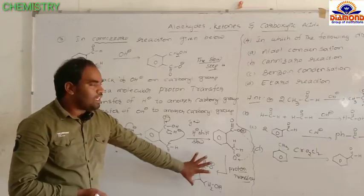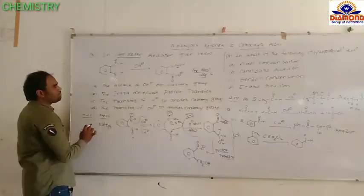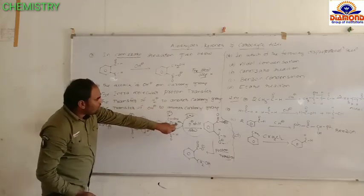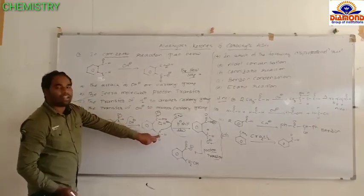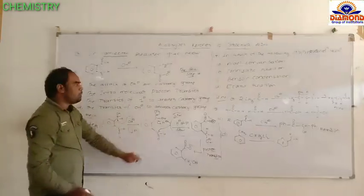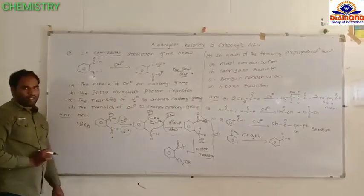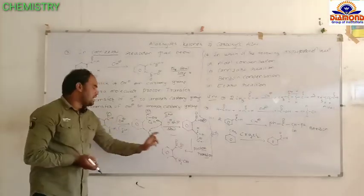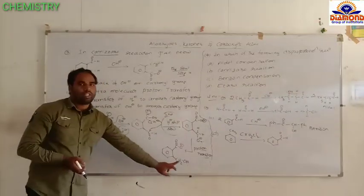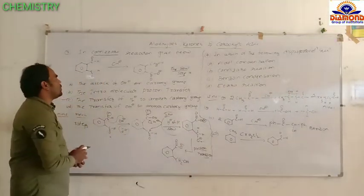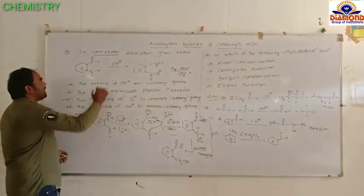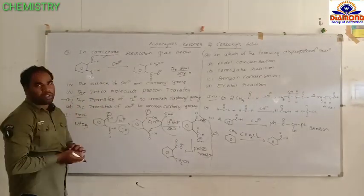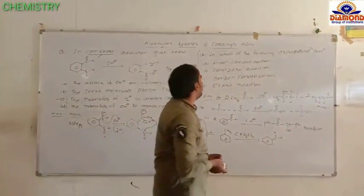So totally, the Cannizzaro reaction has three steps: hydroxide ion attacking the carbonyl carbon; hydride shift to another carbonyl carbon; and proton transfer. The transfer of hydride to another carbonyl group is the slow step. In this reaction, one aldehyde is converted into carboxylic acid and another aldehyde is converted into alcohol. That is the Cannizzaro reaction, and the slow step is the hydride transfer — the second step.